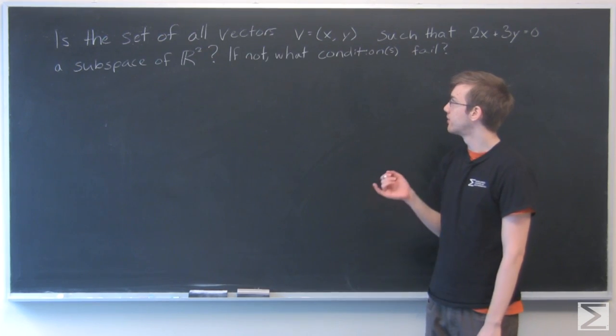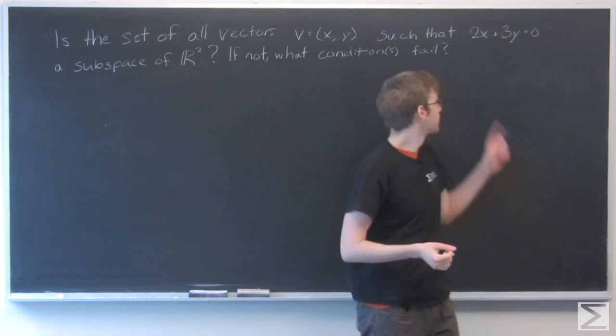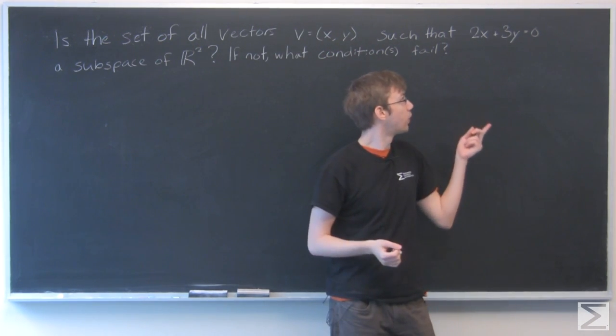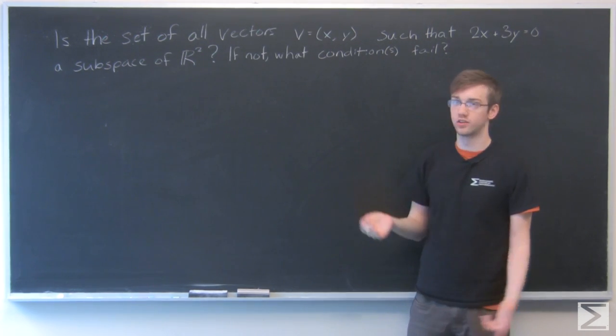This problem asks if the set of all vectors v = (x, y) such that 2x + 3y = 0 is a subspace of R2, and if not, what conditions fail?